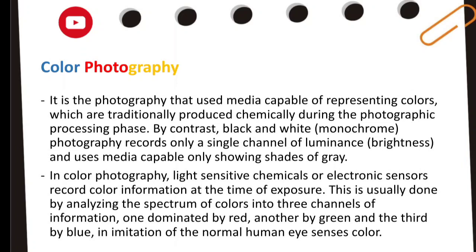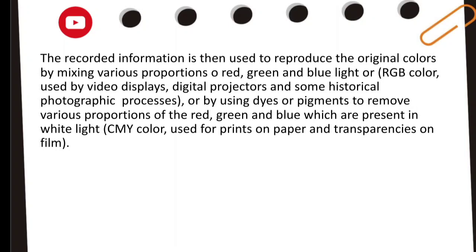In color photography, light-sensitive chemicals or electronic sensors record color information at the time of exposure. This is usually done by analyzing the spectrum of colors into three channels of information — one dominated by red, another by green, and the third by blue (RGB) — in imitation of the normal human eye's color sensing. The recorded information is then used to reproduce the original colors by mixing various proportions of red, green, and blue light.